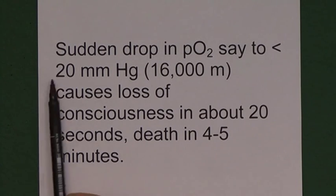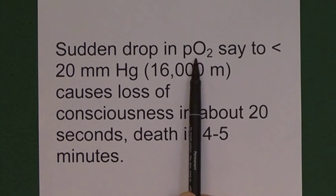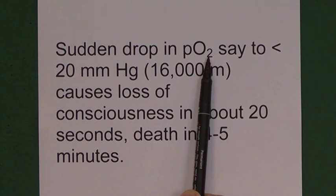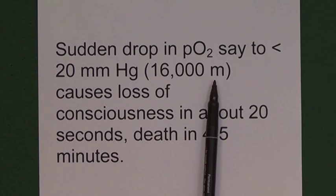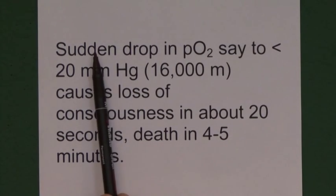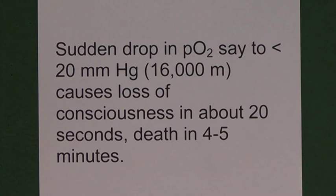If you're in an airliner and there's a sudden decompression — a window breaks and all the air goes out — there will be an absolutely sudden drop in partial pressure of oxygen. The partial pressure of oxygen at sea level is about 160 mmHg; at 16,000 metres altitude this could drop to as low as 20 mmHg, essentially going from adequate levels to almost nothing. If oxygen levels drop that dramatically, loss of consciousness occurs in about 20 seconds. This is why airlines instruct you to put your own oxygen mask on before your child's — you could be unconscious within 20 seconds and unable to help. Death will occur four or five minutes later.